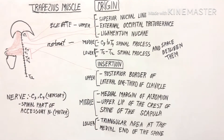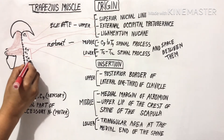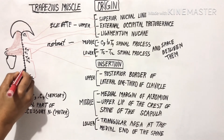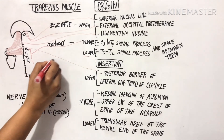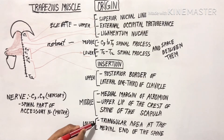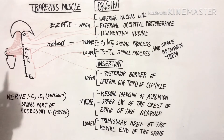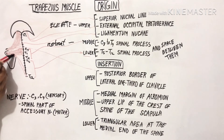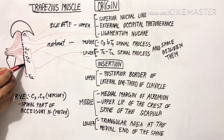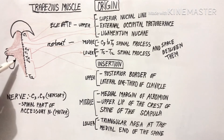The lower part originates from the spinous processes of T5 to T12 and the spaces between them. The upper and lower fibers act together with serratus anterior to rotate the scapula forward around the chest wall, enabling abduction of the arm beyond 90 degrees.